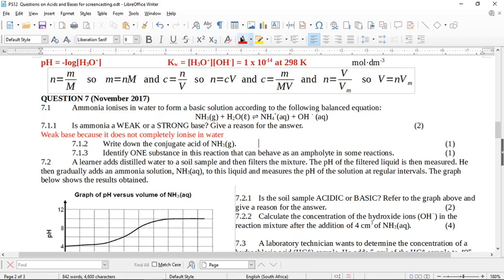Write down the conjugate base of ammonia. So to get a conjugate base, okay, here, here is the conjugate base, the ammonium ion, because, um, what am I saying? Write down the conjugate acid of ammonia. Sorry, no wonder I was confused. The conjugate acid of ammonia, if you want to find the conjugate acid, you must add a proton.